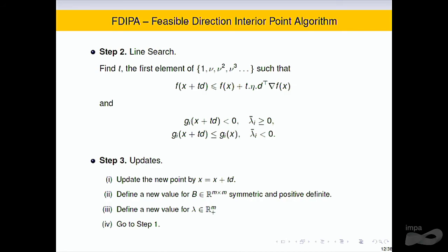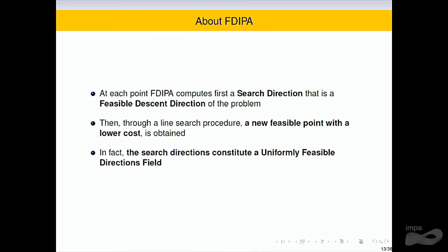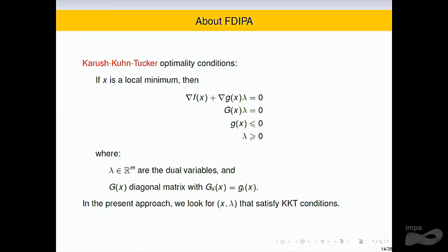Here we present a kind of Armijo line search. In the line search we want to find a new step with a decrease of the function and feasibility. I shall now explain how we arrive at this formulation. We have the Karush-Kuhn-Tucker optimality conditions for the inequality constraint problem: the gradient of the Lagrangian equals zero, the complementarity conditions where G is a diagonal matrix with the constraints on the diagonal, and the inequality conditions on G and lambda.